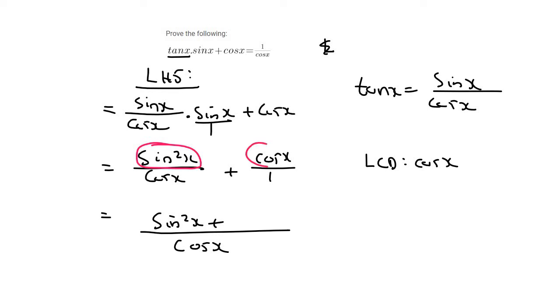But then this part is going to be multiplied by the common denominator. And so that's going to become cos x times cos x. Now cos x times cos x is just cos squared x.